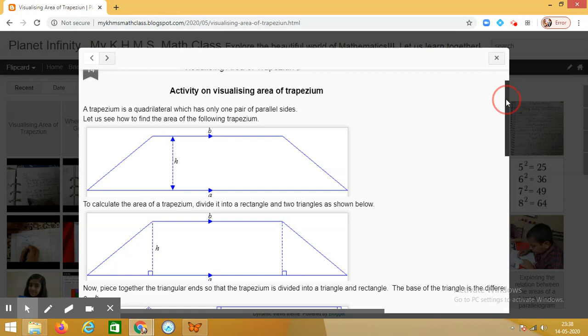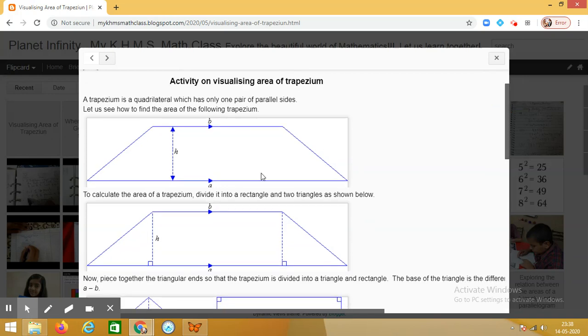You can see on the screen there is a trapezium and I have taken the sides, parallel sides of the trapezium as the bigger one is small a and the smaller side is b and the distance between the parallel sides is represented by h.